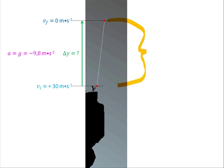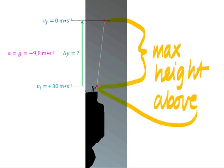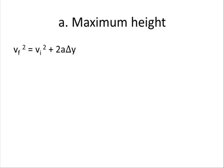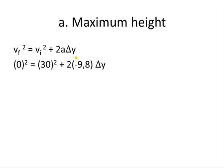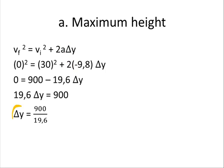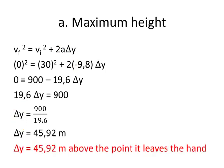What we're asked to find is the maximum height above the thrower's hand — in other words the displacement in the vertical direction, delta y. We choose an equation of motion with only one unknown, which is delta y. We substitute values, being careful to include the negative sign of the acceleration due to gravity, and solve for delta y. Don't forget to include the unit meters because we were asked for height.